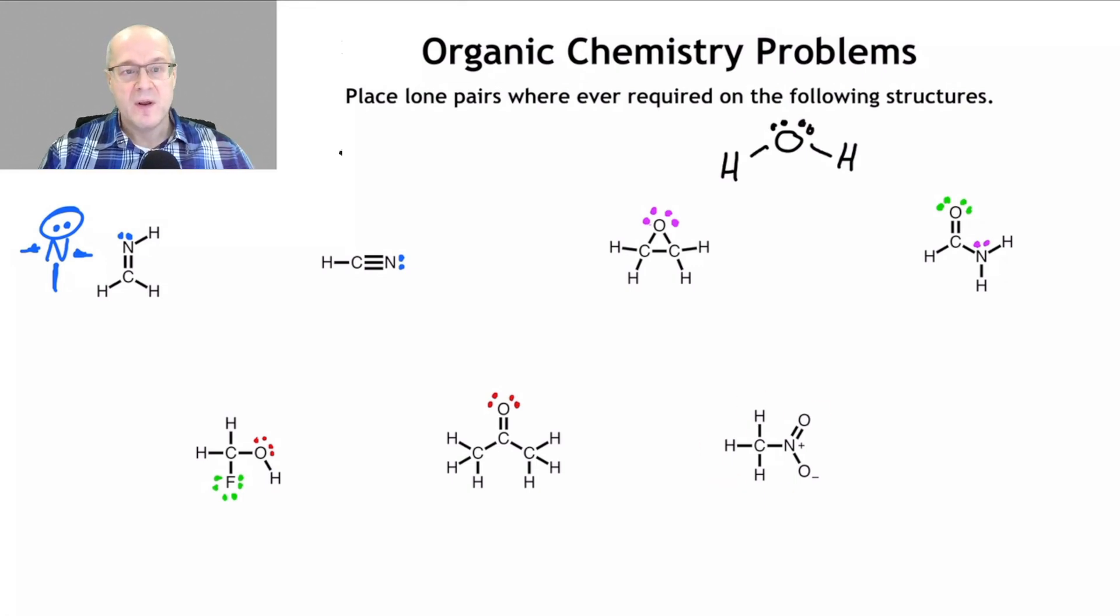Now we have a tougher one over here. This is by far the hardest one on the screen. Remember, everybody wants to have an octet. That's the first thing you have to remember. Let's examine the nitrogen. Nitrogen, as it's drawn, has two, four, six, eight. As it's drawn, the nitrogen has eight electrons. So don't put any lone pairs on that nitrogen. It already has an octet as it's drawn. It also has a plus charge. So it's a cation. Now we're going to do a subsequent video where we talk about formal charge. Don't worry about that for right now. Just worry about this nitrogen has eight electrons already.